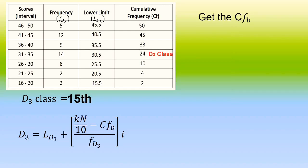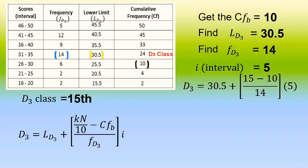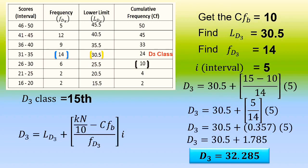Now we identify the values for the formula. The cumulative frequency before the D sub 3 class is equal to 10. The lower boundary of the D sub 3 class is equal to 30.5. The class interval is equal to 5. Substituting into the formula: D sub 3 equals 30.5 plus the quantity 15 minus 10, divided by 14, times 5. Simplifying gives us D sub 3 equal to 32.285. Therefore, the approximate value of our third decile is 32.285.